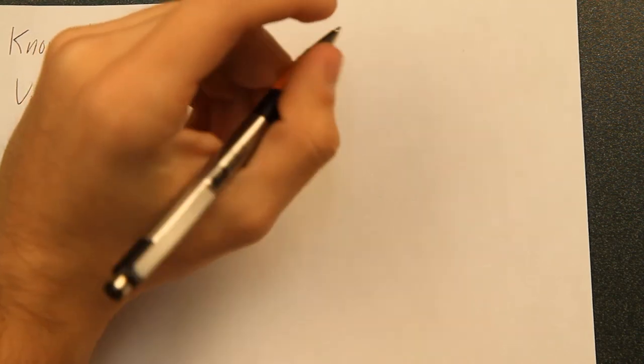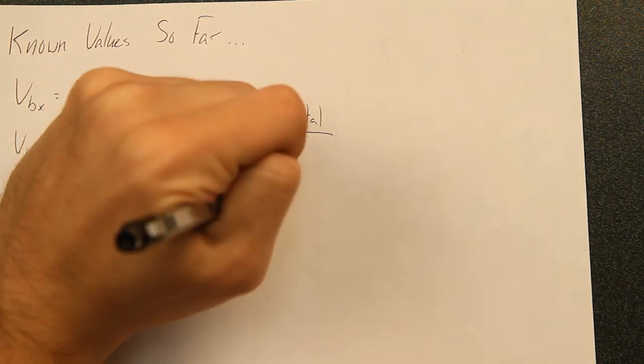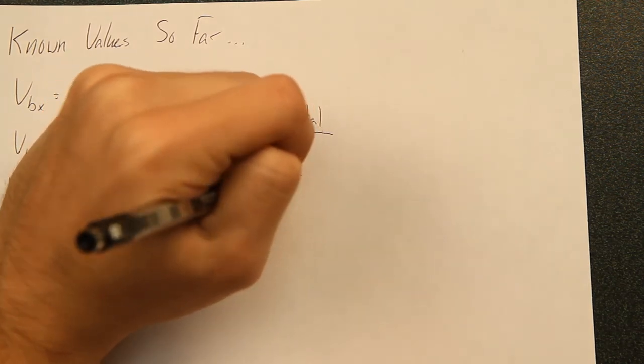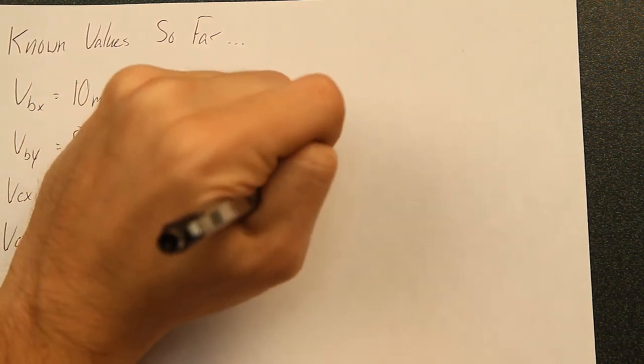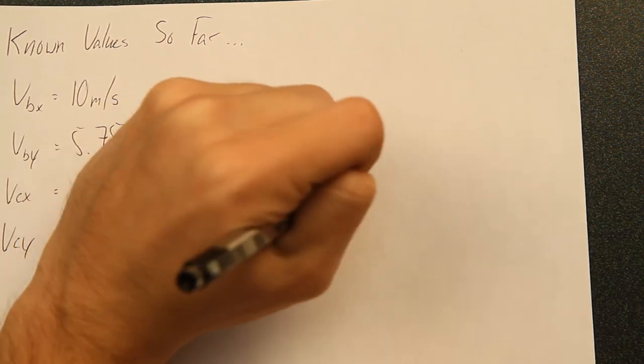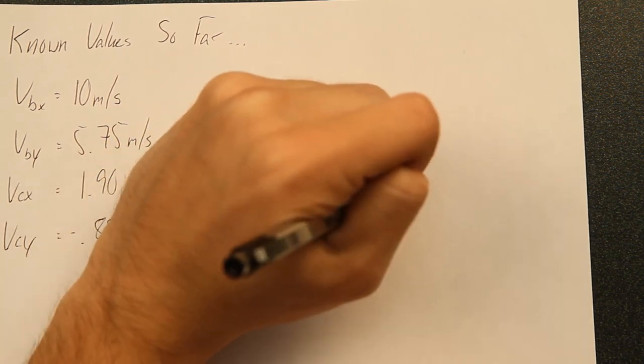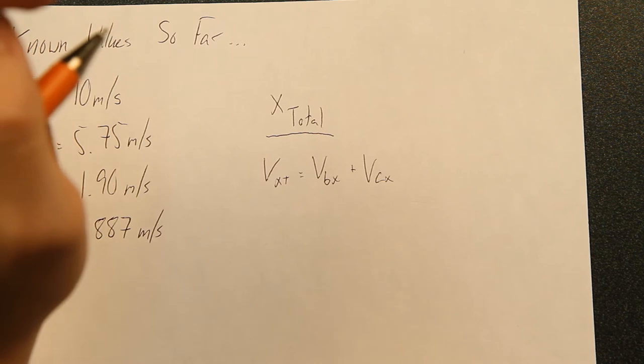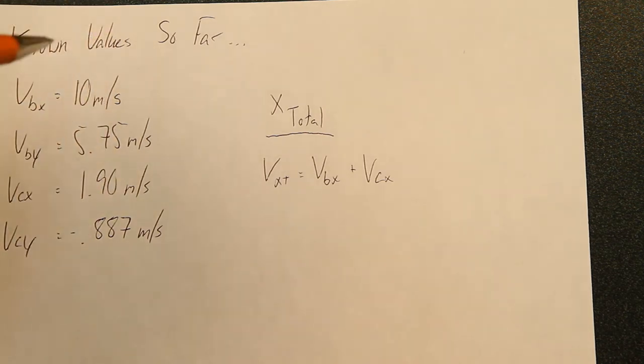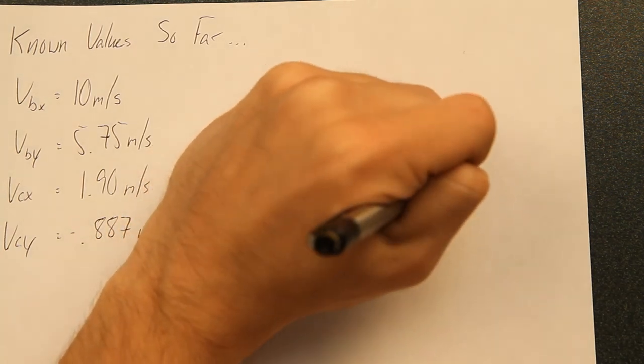our resultant vector is going to be equal to the velocity of b of x plus the velocity of c of x, which if you add together b of x and c of x, you're going to get 11.9 meters per second.